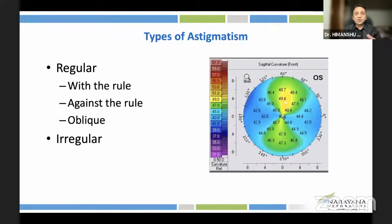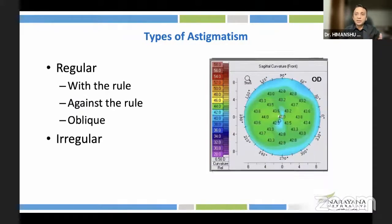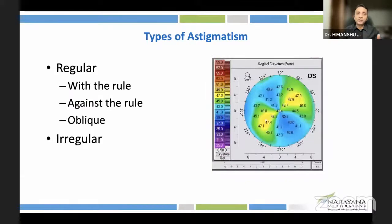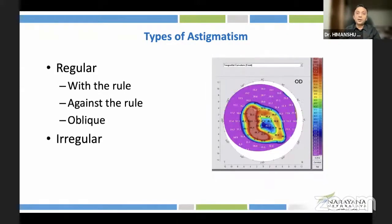When we talk about astigmatism, we normally classify it as with-the-rule, against-the-rule, or oblique — all of which can be suitable for toric IOLs. However, irregular astigmatism is one that may not be suitable for toric IOLs. If you do keratometry in such cases, you may get values, but unfortunately they may not be very accurate.